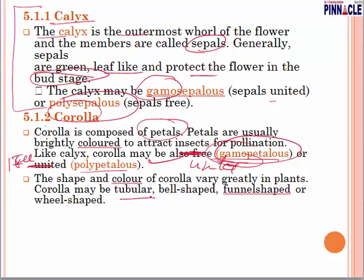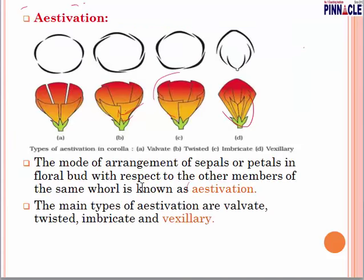Corolla may be tubular, bell-shaped, funnel-shaped, or wheel-shaped — different kinds of shapes are there. The mode of arrangement of sepals or petals in a flower bud with respect to other members of the same whorl is known as aestivation.